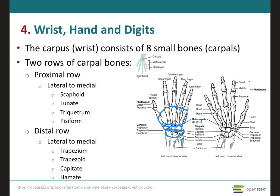On the proximal row, there's the scaphoid, lunate, triquetrum, and pisiform. And on the distal row, it's going to be the trapezium, trapezoid, capitate, and hamate.